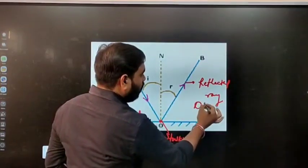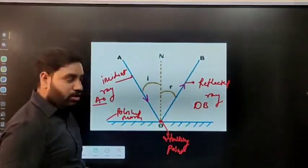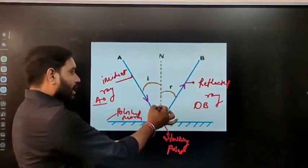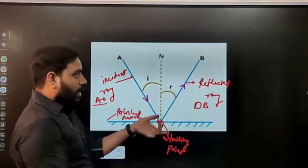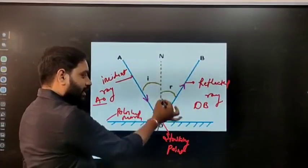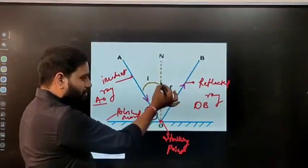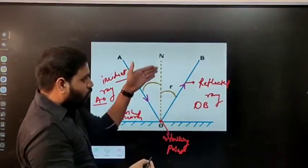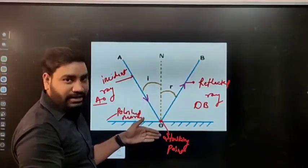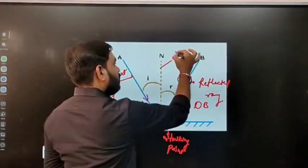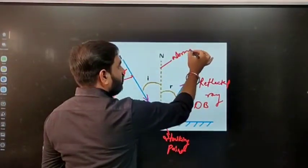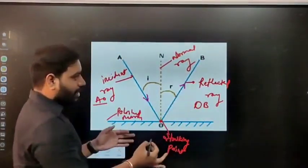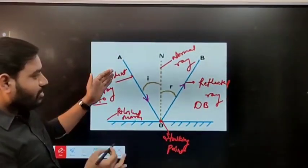Reflected ray is OB. So you can see in between AO and AB there is one ray in the path, perpendicular. That is ON and this is the normal ray.